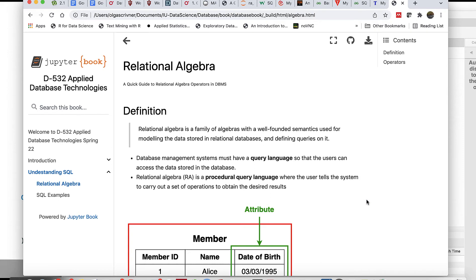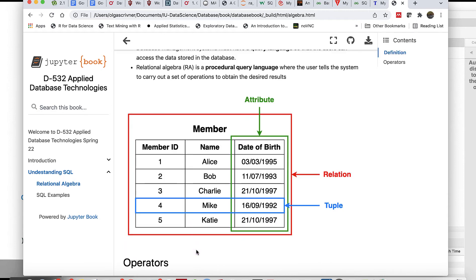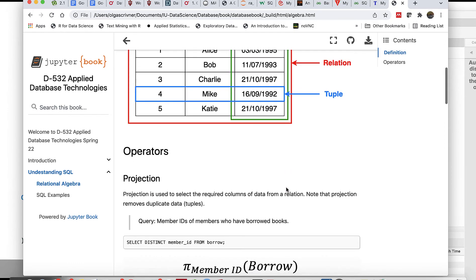Welcome back. Today we'll discuss relational algebra and how it relates to relational database management systems. A database management system must have a query language that helps users access data stored in the database. Relational algebra is a procedural query language where users tell the system to carry out a set of operations. Relational algebra is a family of algebras with well-founded semantics used for modeling. Let's review some concepts and terminology related to databases. Remember, we have relations which are our tables, attributes which are our columns, and tuples which are our records. Several relational algebra operators include projection, selection, rename, cross product, union, intersect, and natural join.